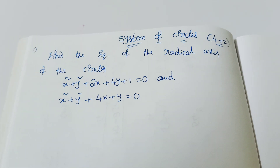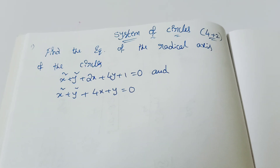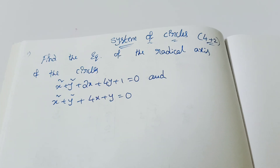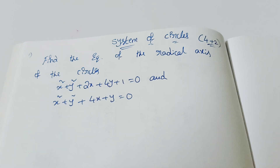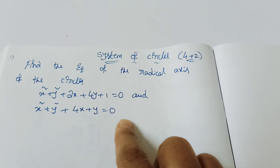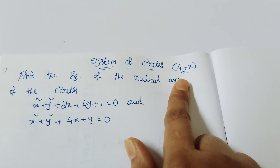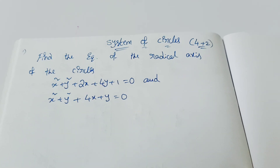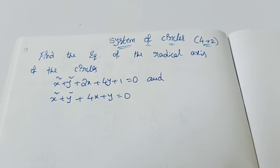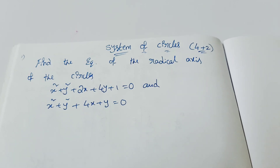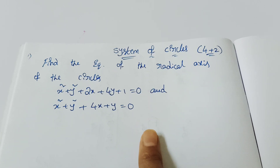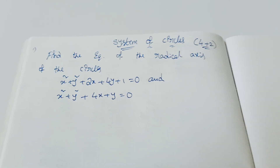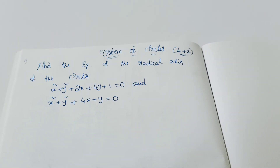Hi media students, welcome back to my channel. Today we discuss system of circles important questions and some formulas. The weightage for system of circles is 4 plus 2 marks — one 4-mark question and one 2-mark question. About 70 percent of this topic is still relevant; some portions may be updated until the next academic year like 2022.